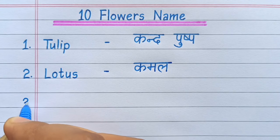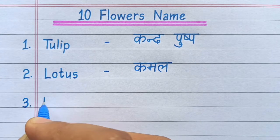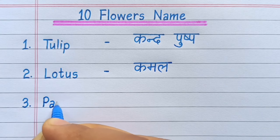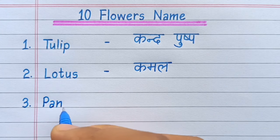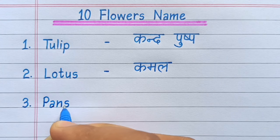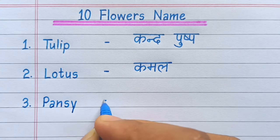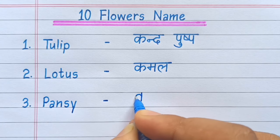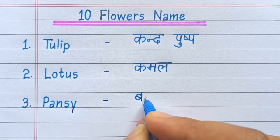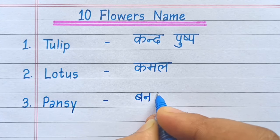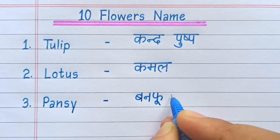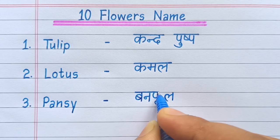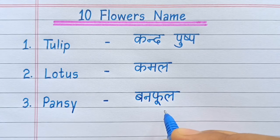Third number: P-A-N-S-Y, Pansy. Pansy means Bunphool.